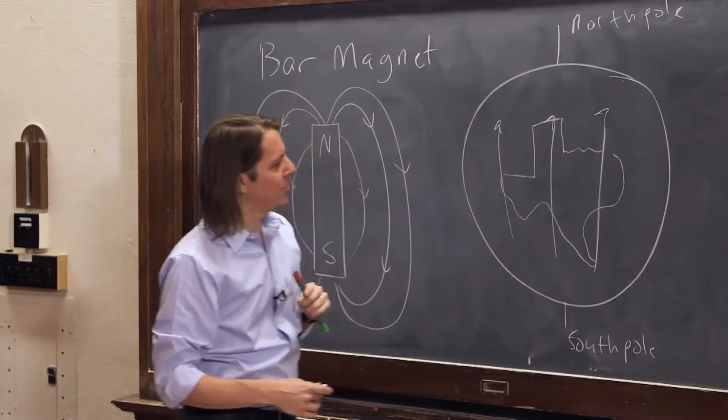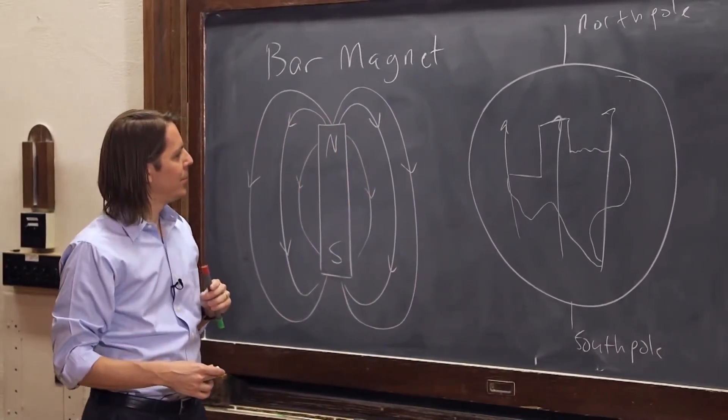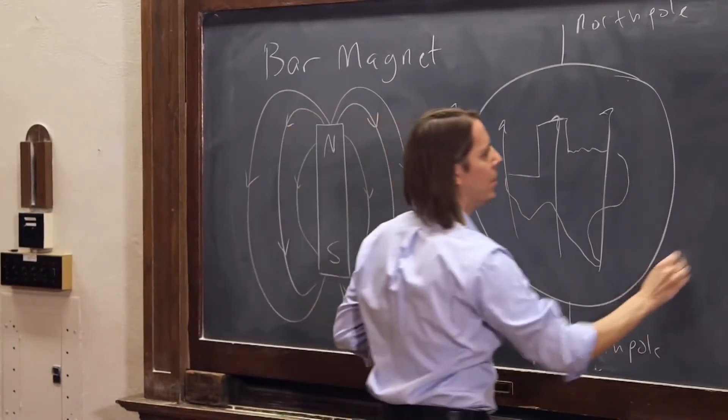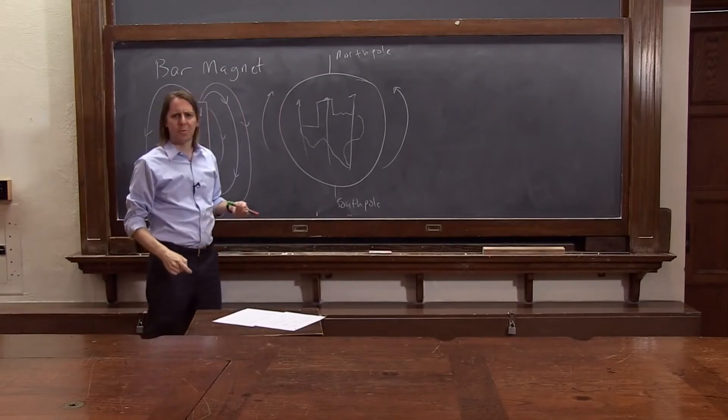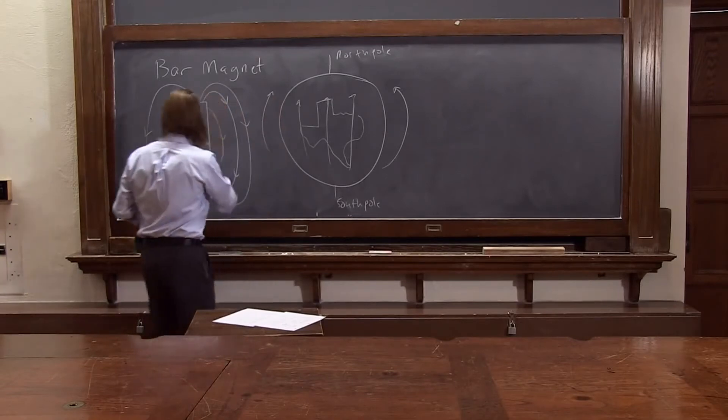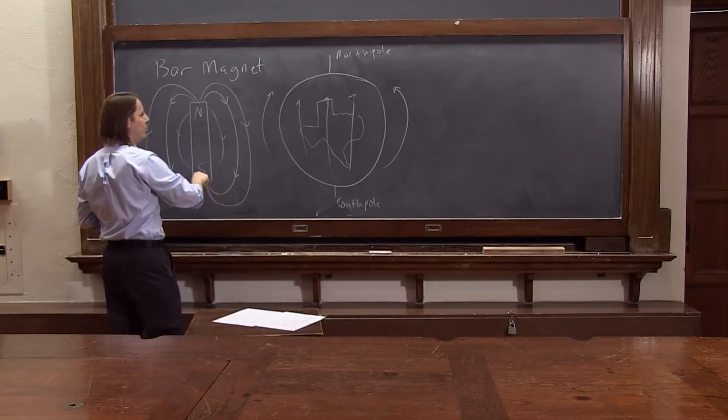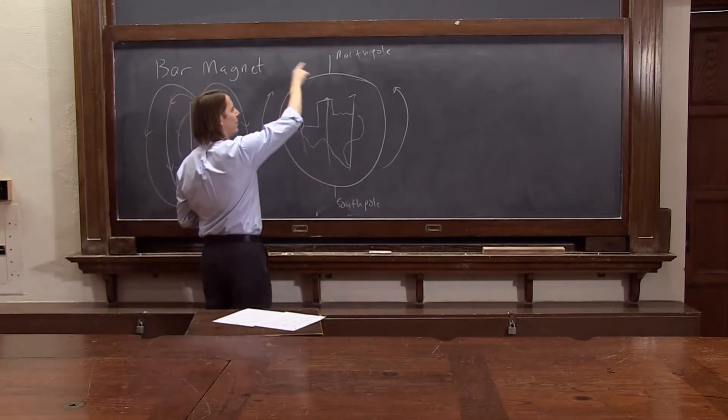If you look at this, you might quickly see something a little bit confusing. If the field is going that way outside the Earth, it seems like the names of north and south are wrong. Because the field lines are supposed to go from the north pole to the south pole on the outside of the magnet. And here I have them going from south to north.